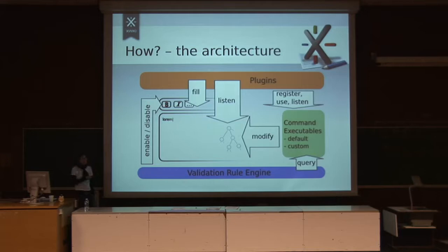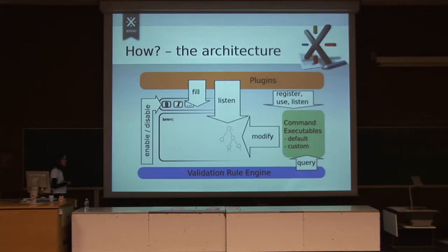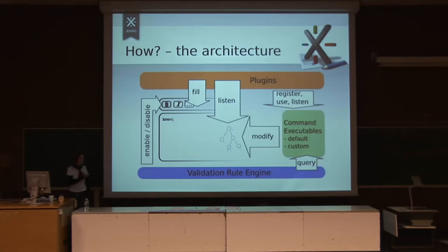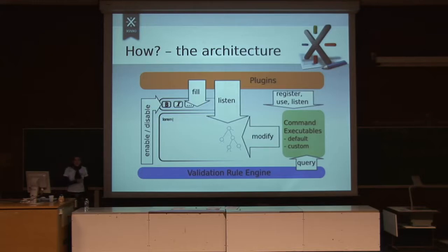The plugin has access to this command manager. A plugin can tell the command manager: whenever bold is executed, execute what I tell you and not the browser default, which is very cool. The plugin asks the command manager to modify the actual edited document. What's really nice in this whole architecture is that plugins have access to the content being edited through the DOM and Range API, which is the right level of API. They also have access to the commands — they can create new commands or override existing ones, use them, and know when they have been executed.